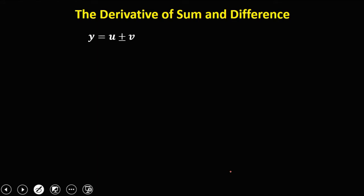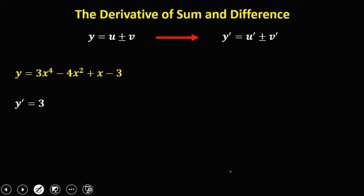For the derivative of sum and difference, y equals u plus or minus v, the formula is: y prime equals u prime plus or minus v prime. Given y equals 3x to the power 4 minus 4x squared plus x minus 3, we find the derivative of each term. Using the power rule on 3x to the power 4: the 4 becomes the numerical coefficient, minus 1 for the exponent, giving 4x to the power 3. Then minus 4 times the derivative of x squared: the 2 becomes the coefficient, giving 2x.